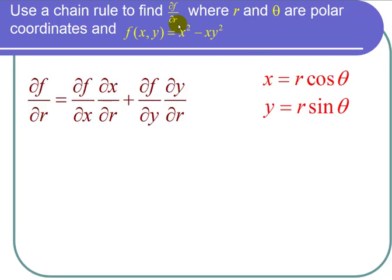The chain rule states that ∂f/∂r = (∂f/∂x)(∂x/∂r) + (∂f/∂y)(∂y/∂r).